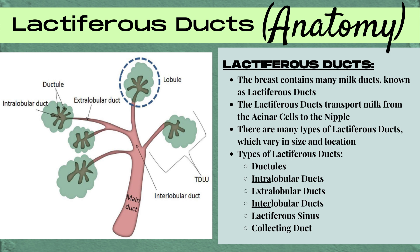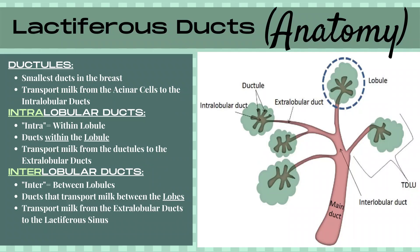Types of lactiferous ducts include ductules, intralobular ducts, extralobular ducts, interlobular ducts, the lactiferous sinus, and the collecting duct. First, let's cover the smallest ducts in the breast — these are known as ductules — and these transport milk from the acinar cells, where the milk is made, to the intralobular ducts.